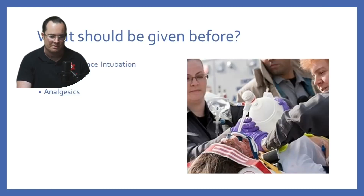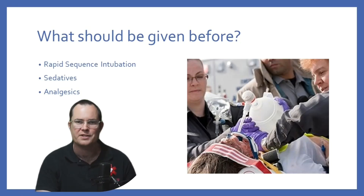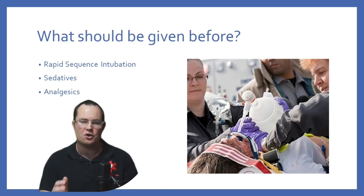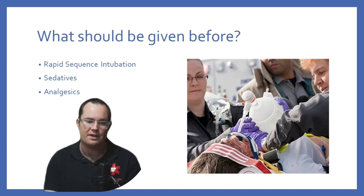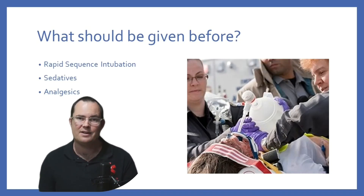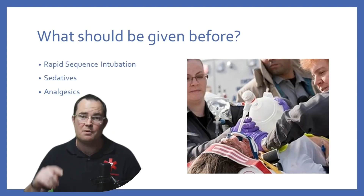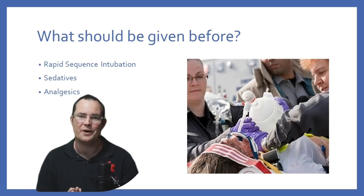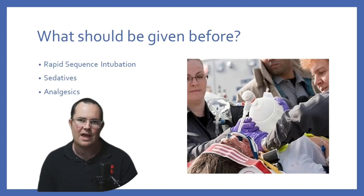With rapid sequence intubation, remember what we should be giving before the neuromuscular blockers. Please do not ever give a neuromuscular blocker to paralyze somebody without giving other medications first. If you give someone a paralyzing agent, they are paralyzed and can't move, but they can still think, still hear you, and still feel pain. You are going to have a lawsuit on your hands.